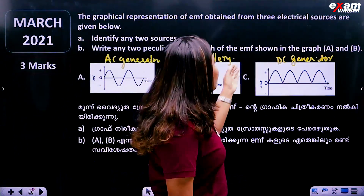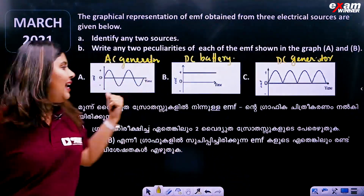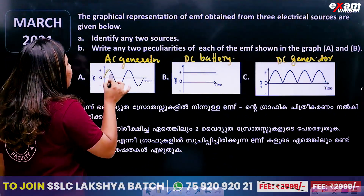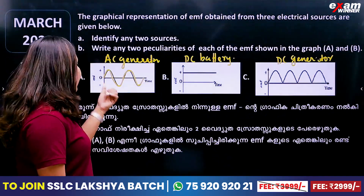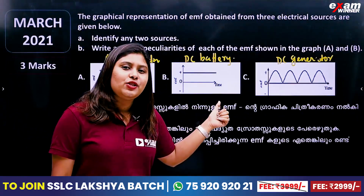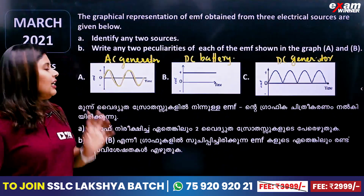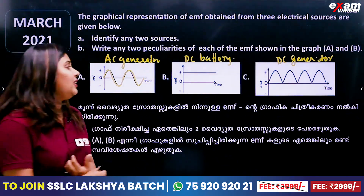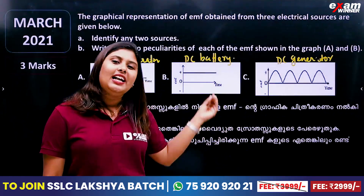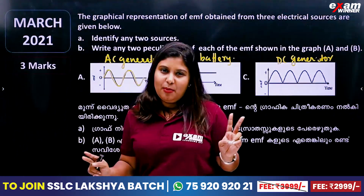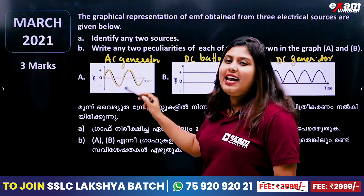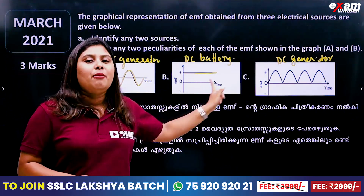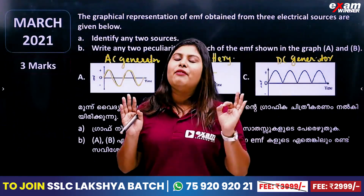Write any two peculiarities of each of the EMF shown in graphs A and B. How does the EMF value change? The EMF value changes and the direction changes. For AC generator: the EMF value changes and the direction changes. For DC generator: the value of EMF is constant and the direction of EMF is constant. If you write these two things, it will be a full mark.